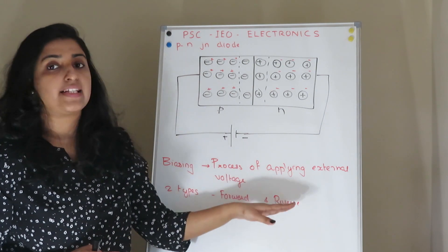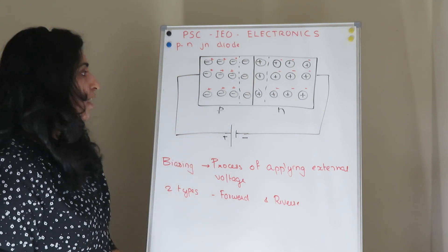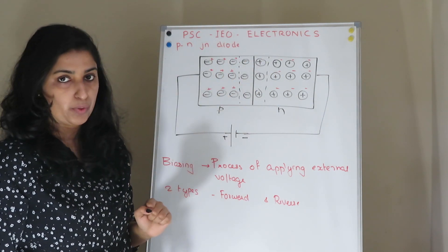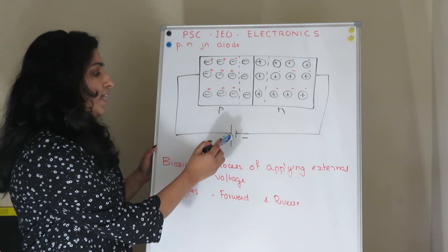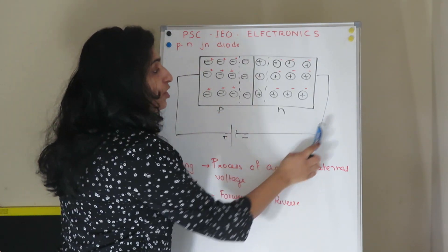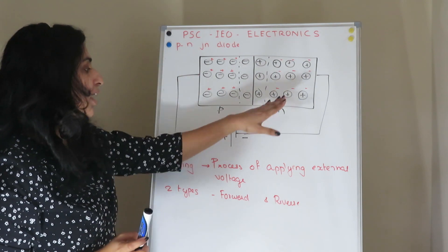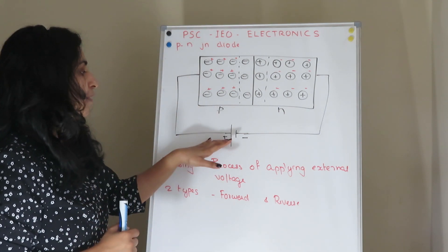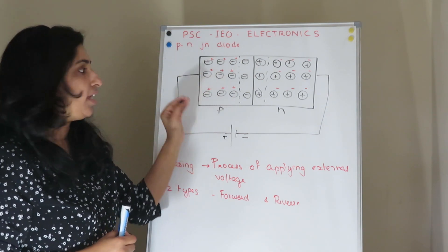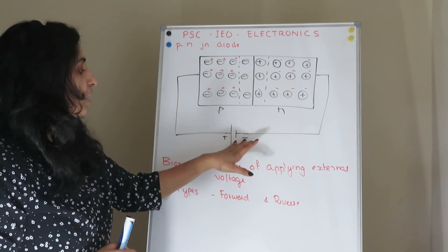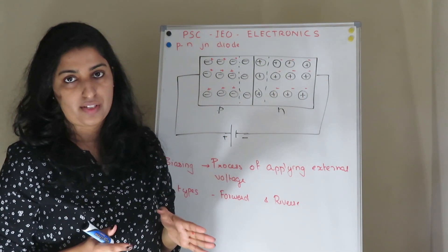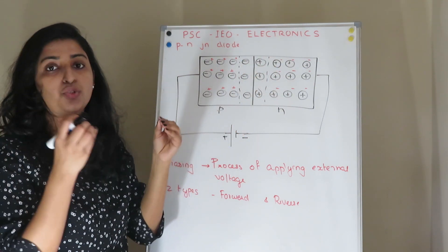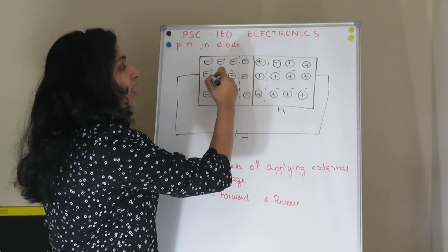There are two types of biasing: forward biasing and reverse biasing. We already know that P-type and N-type semiconductors are fused, forming a depletion region — this is the PN Junction Diode. For forward biasing, the positive terminal of the battery is connected to the P-type and the negative terminal is connected to the N-type. The majority carriers — holes in P-type — are repelled toward the junction, and electrons in N-type are also pushed toward the junction. This is the repulsion effect.